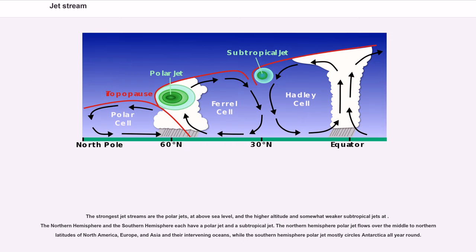The strongest jet streams are the polar jets at above sea level, and the higher altitude subtropical jets. The Northern Hemisphere and Southern Hemisphere each have a polar jet and a subtropical jet. The Northern Hemisphere polar jet flows over the middle to northern latitudes of North America, Europe, and Asia, while the Southern Hemisphere polar jet mostly circles Antarctica all year round.